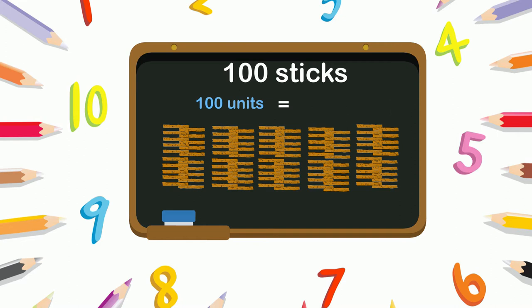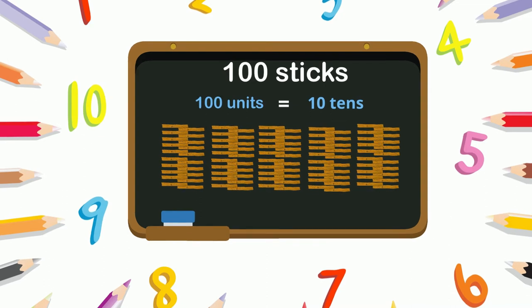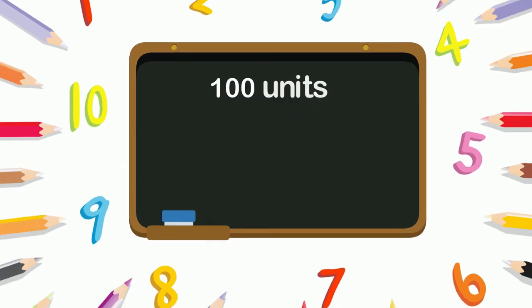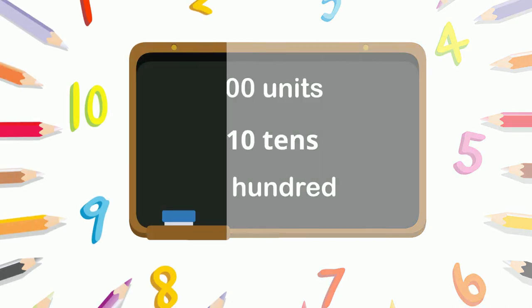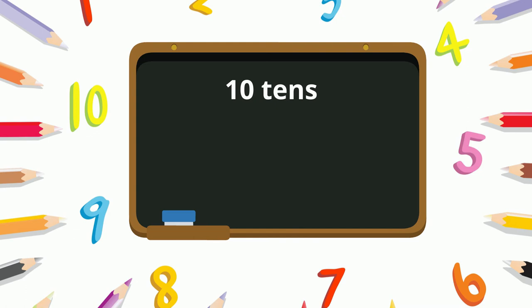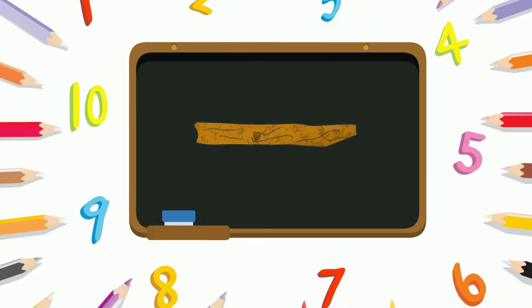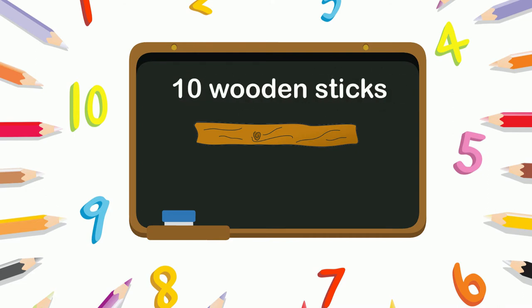Now, the thing to learn here is that hundred sticks are hundred units, which will be equal to ten tens. If we make bundles of ten sticks, when there are hundred units or ten tens, they become one hundred. So we combine ten bundles of tens to make a larger bundle of 100. A woodworker has made smaller bundles of ten wooden sticks each and some larger bundles of hundred sticks.